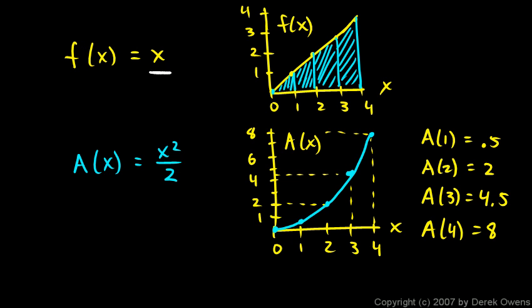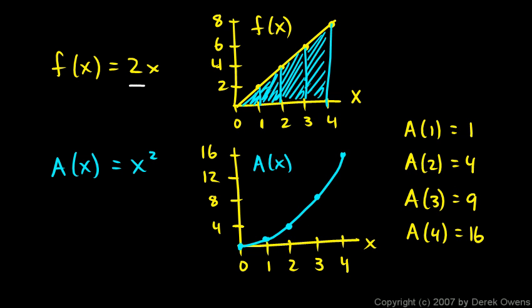And when f of x was x, the antiderivative here, x squared over 2. And when f of x was 2x, here we have the antiderivative x squared.